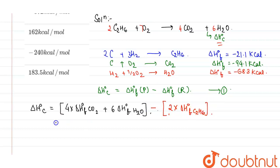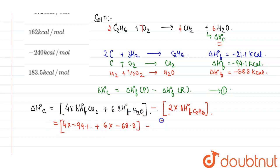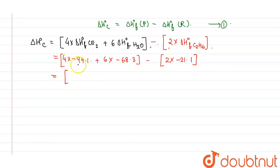Now we will be substituting the values. So it will be 4 times delta H naught F of CO2, which is minus 94.1 kilocalories, plus 6 times delta H naught F of H2O, which is minus 68.3 kilocalories, minus 2 times delta H naught F of C2H6, which is minus 21.1 kilocalories. This gives minus 376.4 and minus 409.8, plus 42.2.